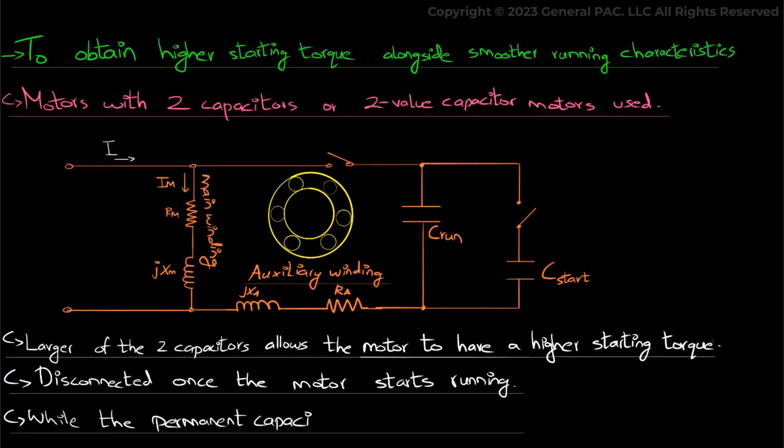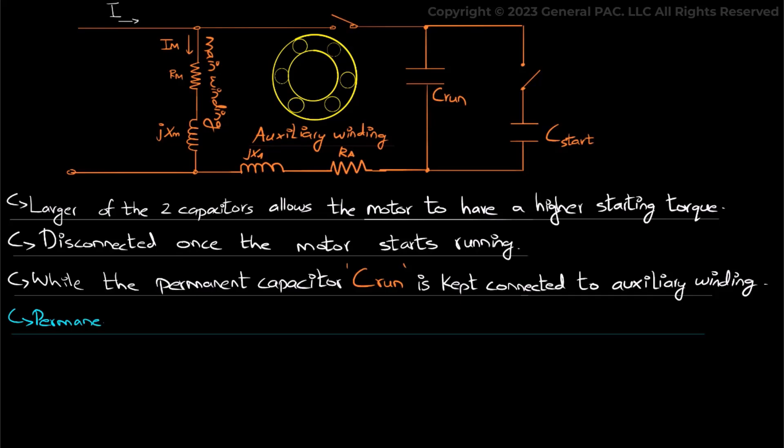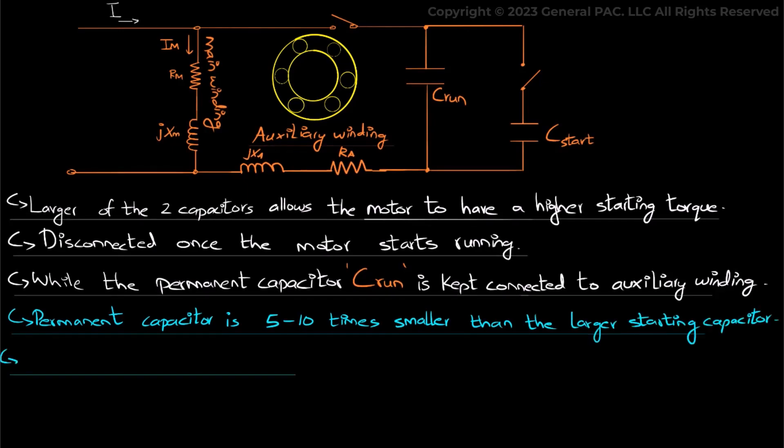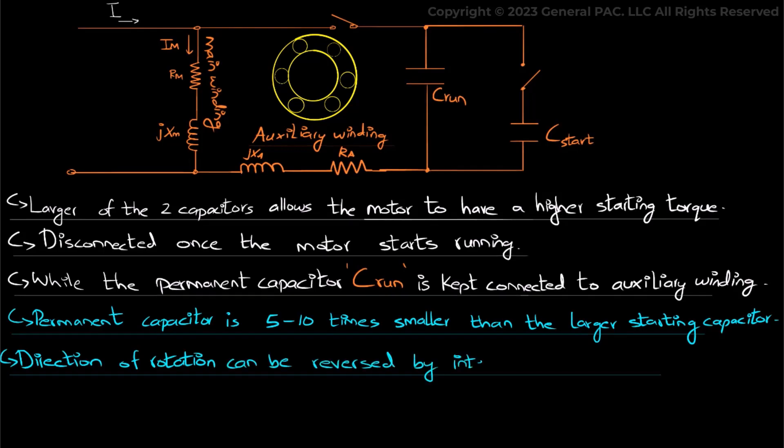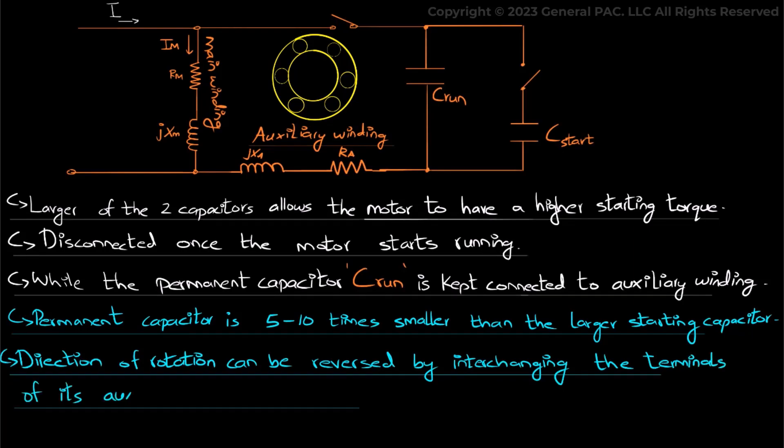While the permanent capacitor referred to as the C-run is kept connected to the auxiliary winding. We should also know that a permanent capacitor is 5 to 10 times smaller than the larger starting capacitor and the direction of the rotation of a single phase motor can be reversed by interchanging the terminals of its auxiliary winding.